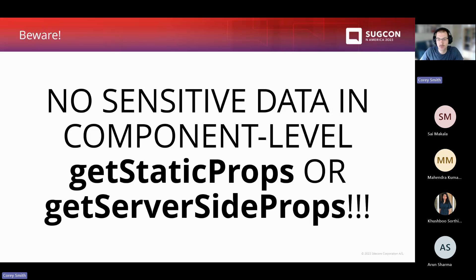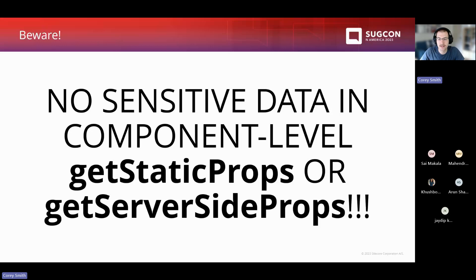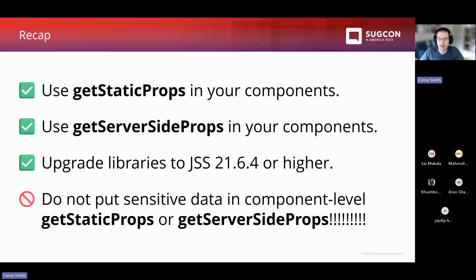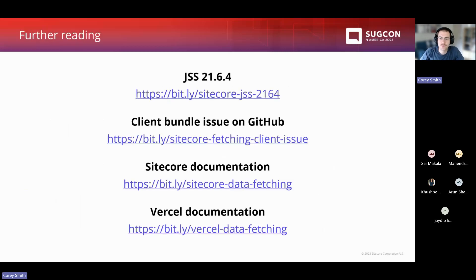Even with this bug, I think there's a lot of value in using component-level data fetching functions. Recap: use getStaticProps and getServerSideProps in your components. If possible, upgrade your libraries to JSS 21.6.4 or higher so you don't have to worry about that concern. But if you can't upgrade, make sure you do not put sensitive data in either of those functions. Further reading includes the JSS 21.6.4 release notes, the GitHub issue, Sitecore's documentation on component-level data fetching, and Vercel's page-level data fetching docs.